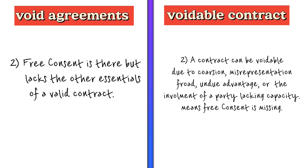The second difference is the element which makes an agreement void or a contract voidable. A void agreement lacks legal enforceability right from the start due to its nature or object being unlawful or against public policy. So despite having free consent, it lacks the other essential elements of a valid contract.